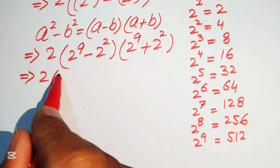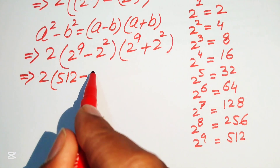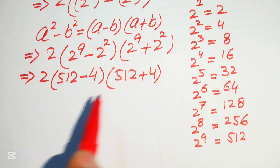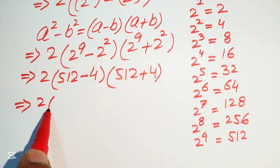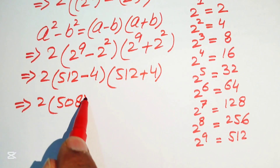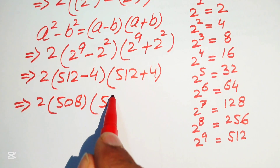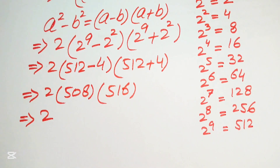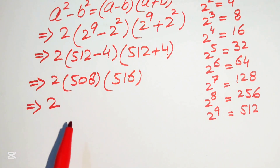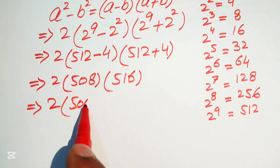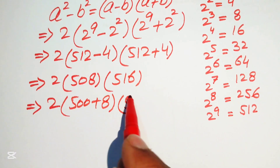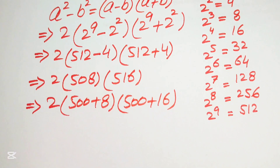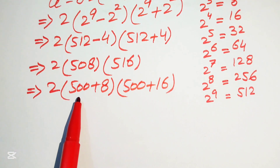Now we replace 2 to the power of 9 with 512. The expression becomes 2 times (2 times 512 minus 2 squared) times (512 plus 2 squared). So 2 times 512 is 1024, and 2 squared is 4, giving us: 2 times (1024 minus 4) times (512 plus 4), which simplifies to 2 times 508 times 516.